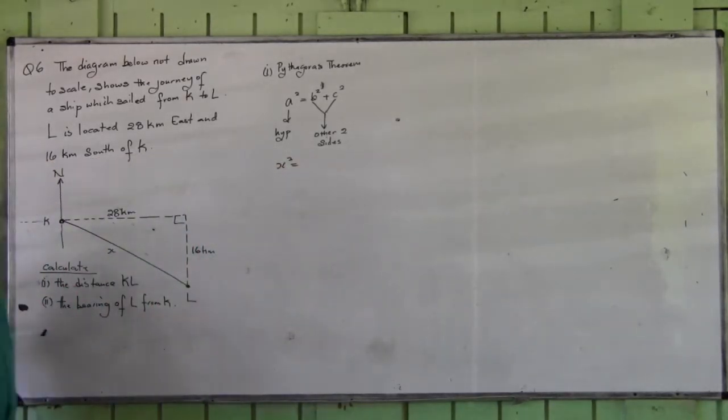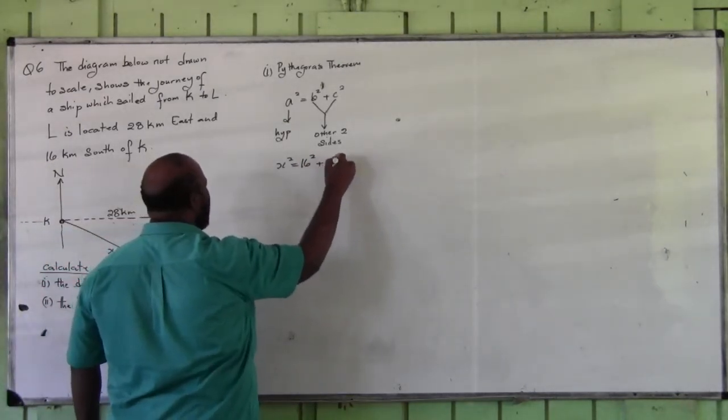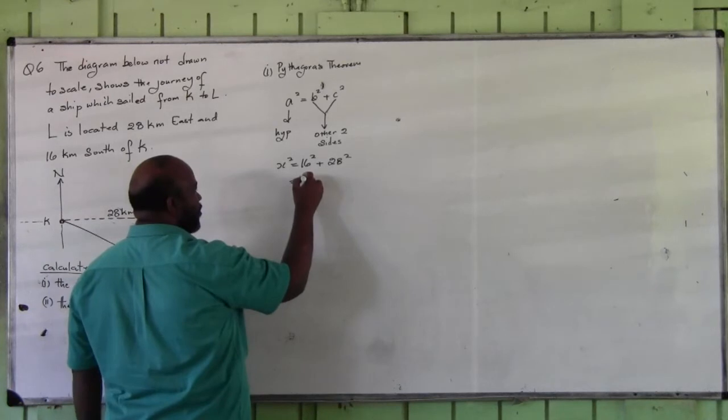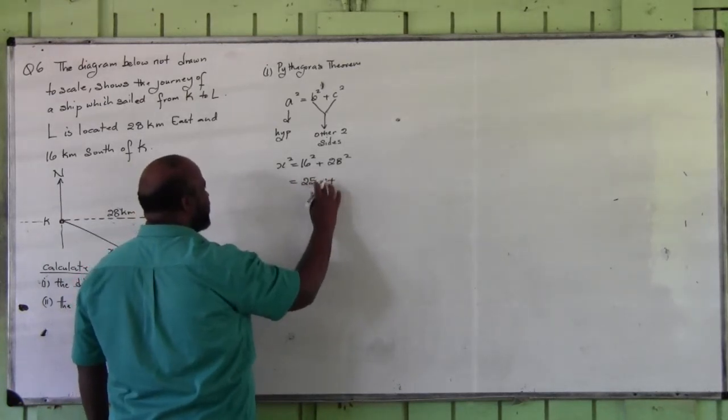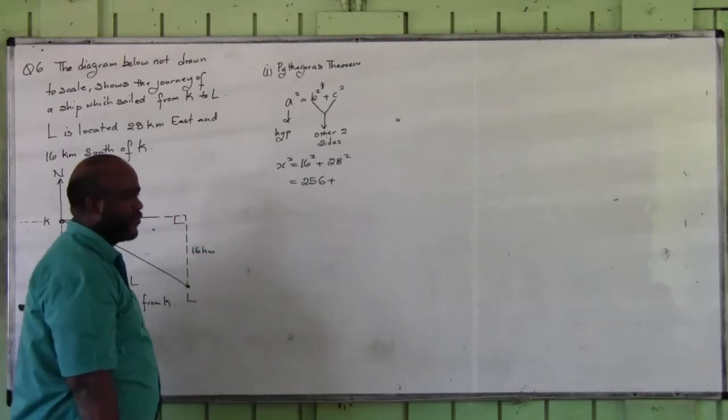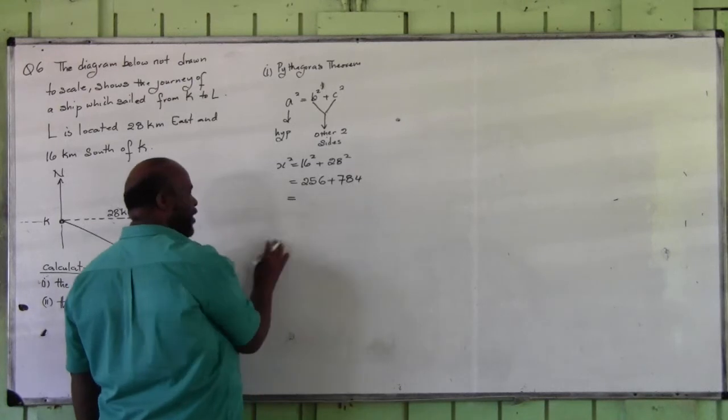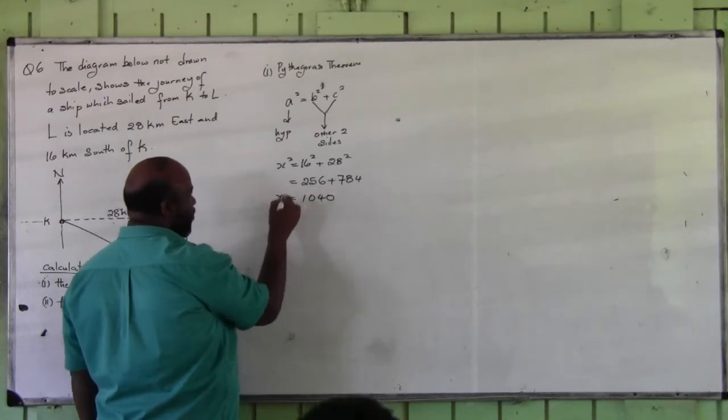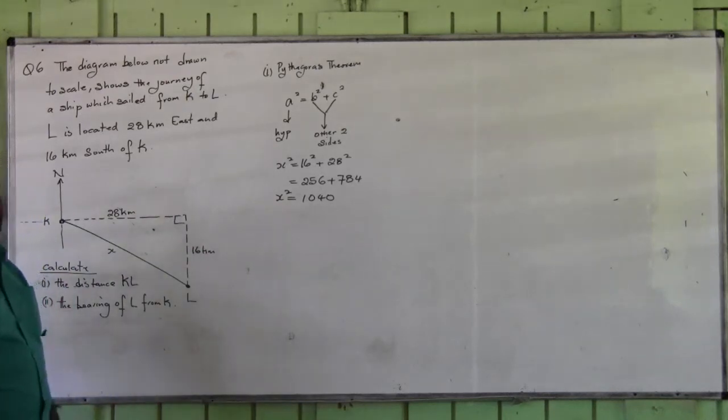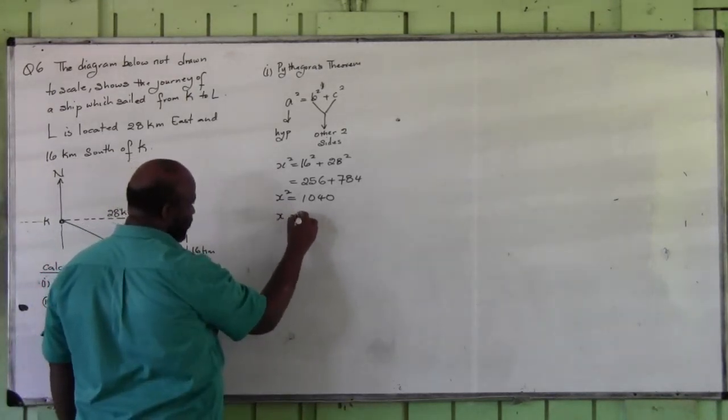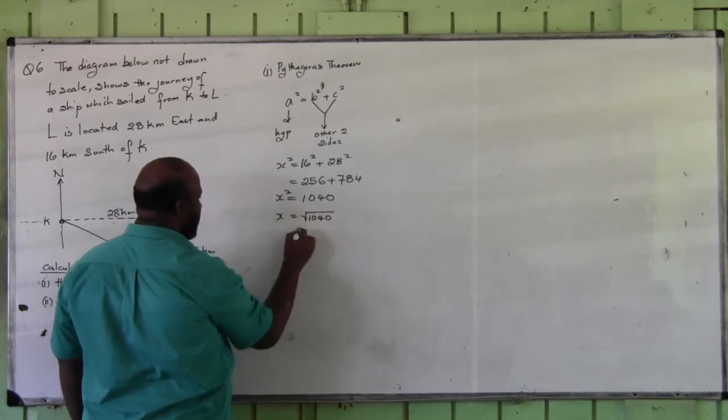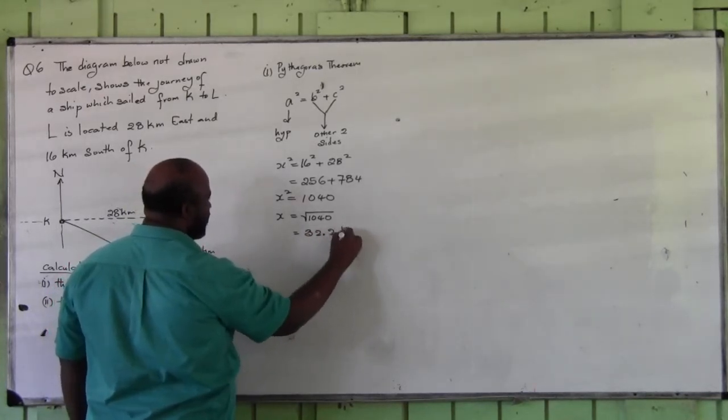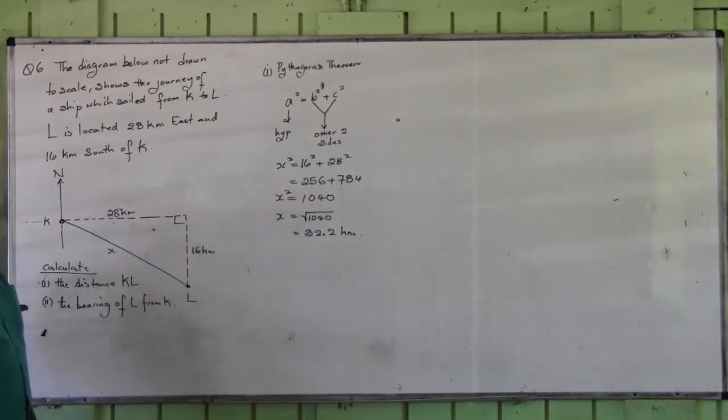Ladies and gentlemen, what is the hypotenuse of this triangle? So this is x squared is equal to the other two sides, so it's 16 squared plus 28 squared. What is 16 squared? What is 28 squared? Seven hundred and eighty four. Add them to get one thousand. What is the opposite of square? This is 32.2 kilometers.